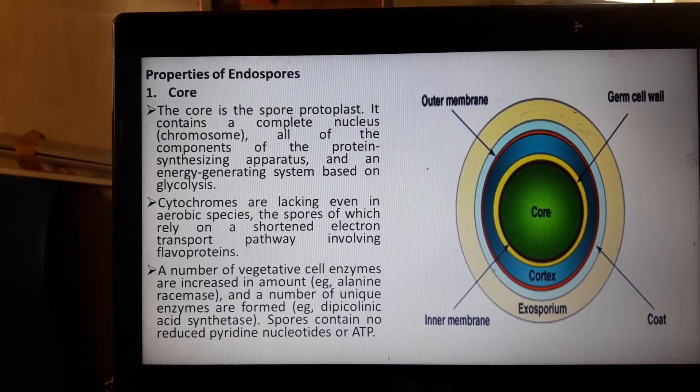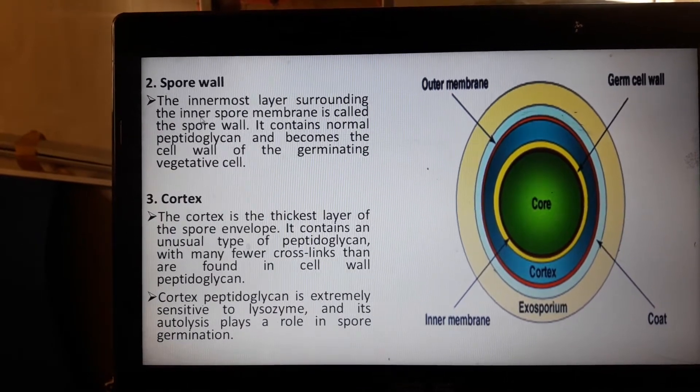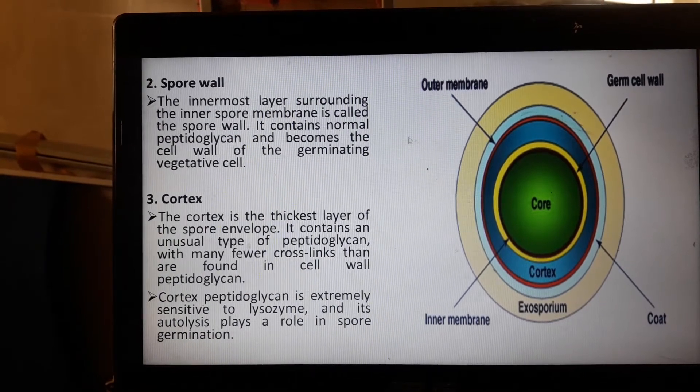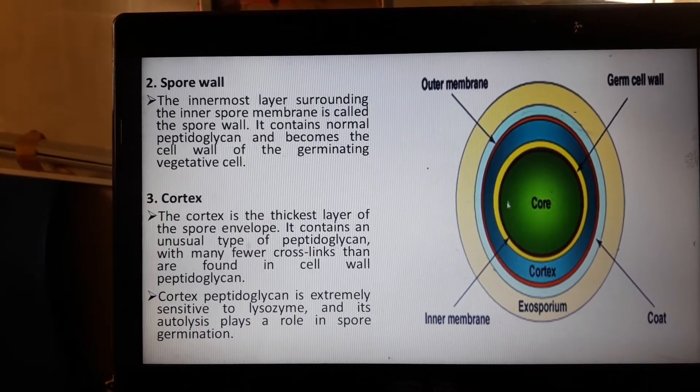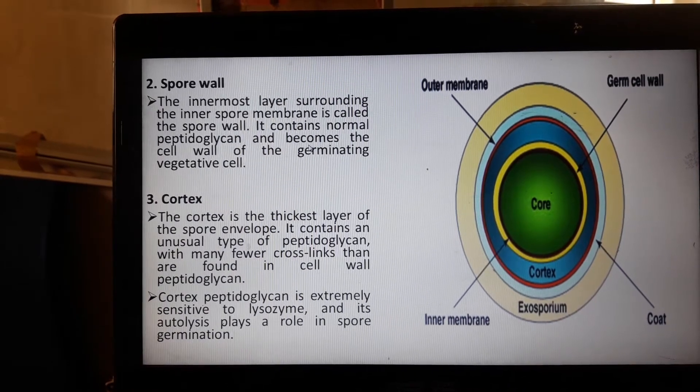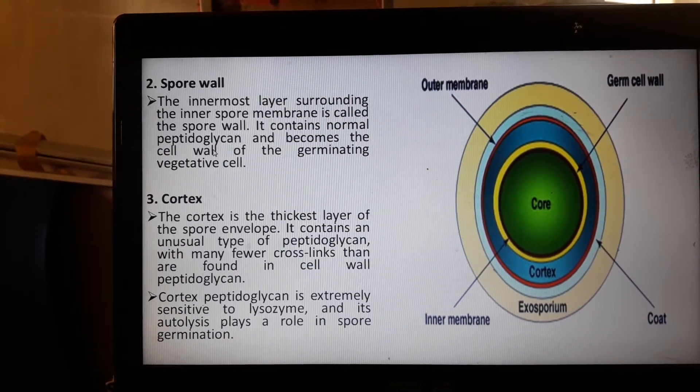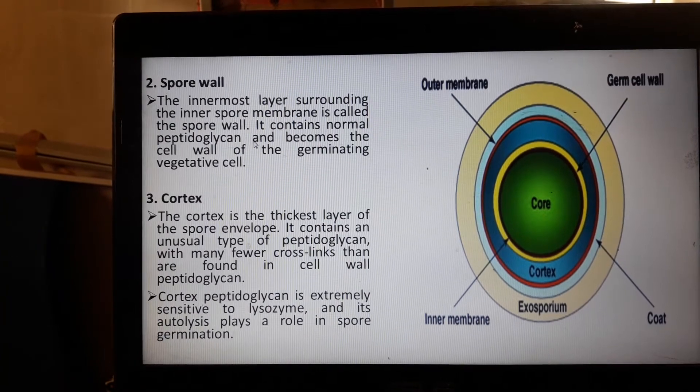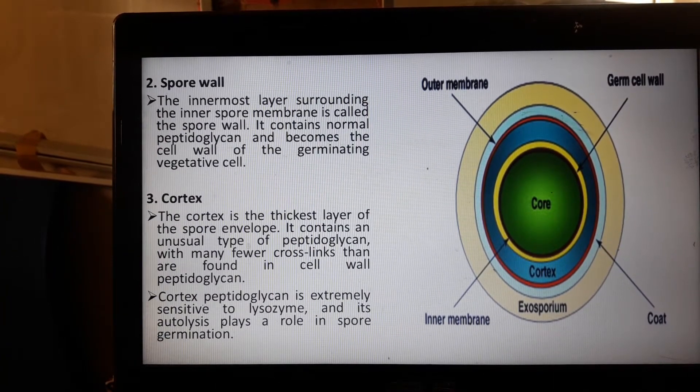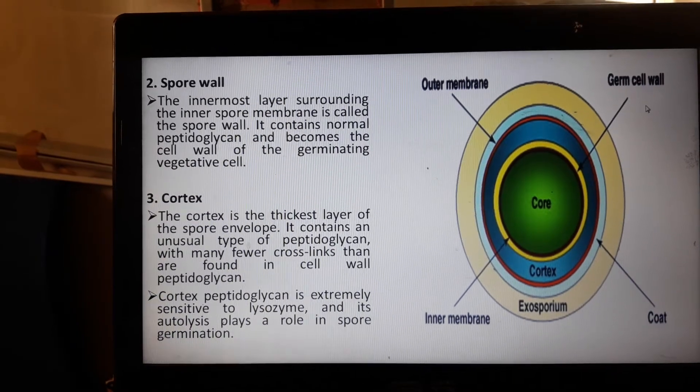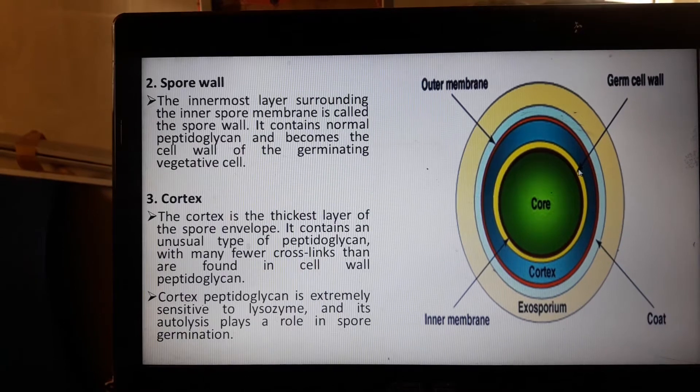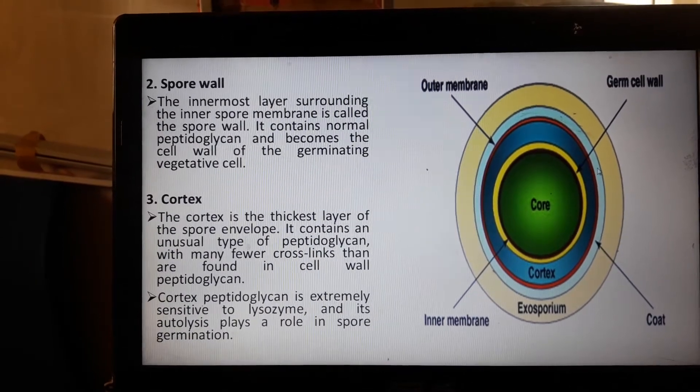Another one is the spore wall, the innermost layer surrounding the inner spore membrane. It contains normal peptidoglycan layer. During the germination stage it becomes the germ cell wall, formed from this spore wall.